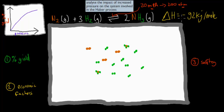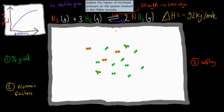Now, why do we use that pressure? When it comes to Le Chatelier's principle, we know that pressure itself affects the equilibrium. We want to make the equilibrium favor the product, because the product is ammonia — we want to increase the ammonia yield. So what happens if we increase the pressure? 200 atmospheric pressure is pretty high. So, we've increased the pressure — what does it do when it comes to the ammonia yield?